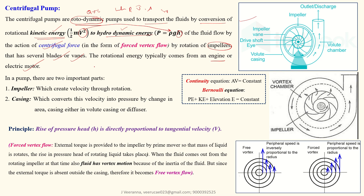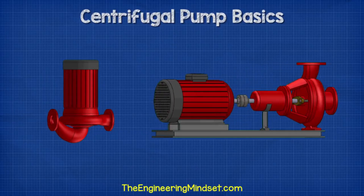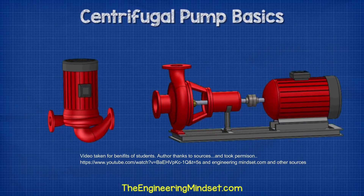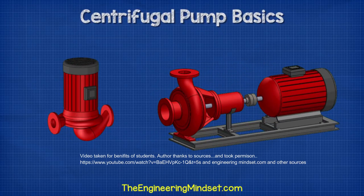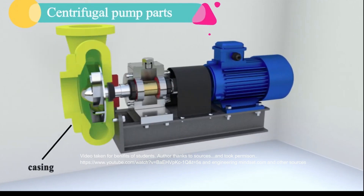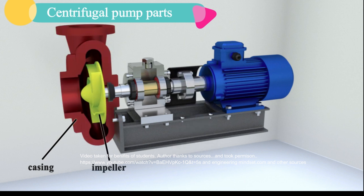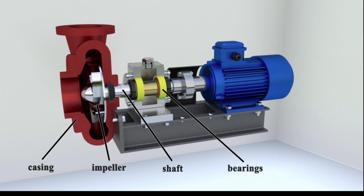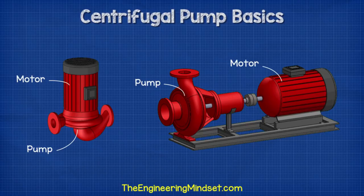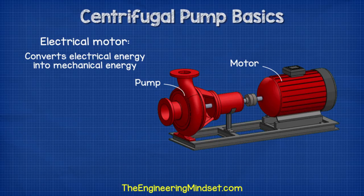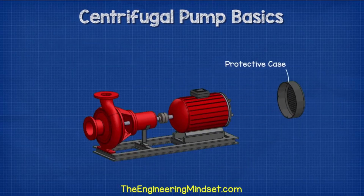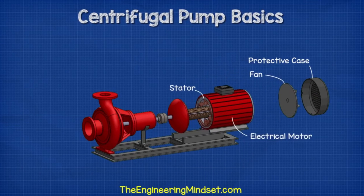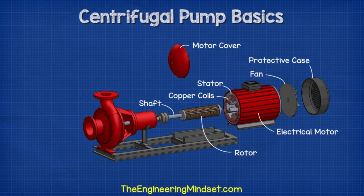Centrifugal pumps come in many shapes and sizes. The pump consists of two main parts: the pump itself and the motor. The pump includes the casing, impeller, pump shaft, bearings, and bearing housing. The motor is an electrical induction motor that converts electrical energy into mechanical energy, containing a fan, stator, rotor, and shaft.